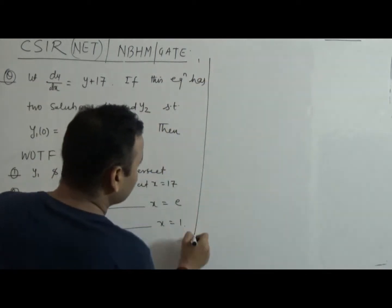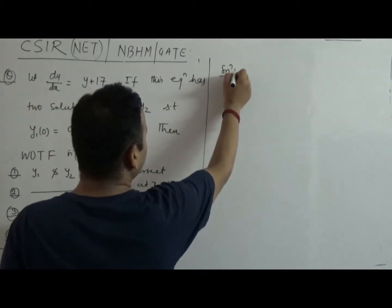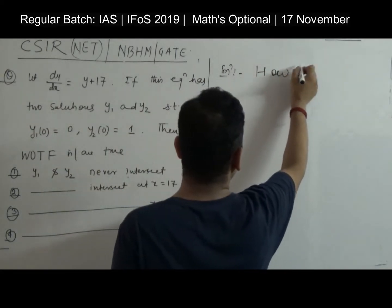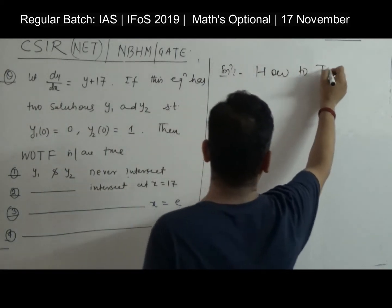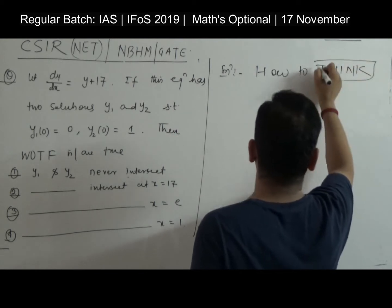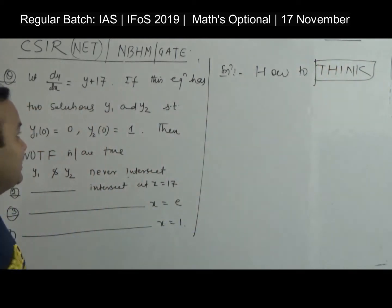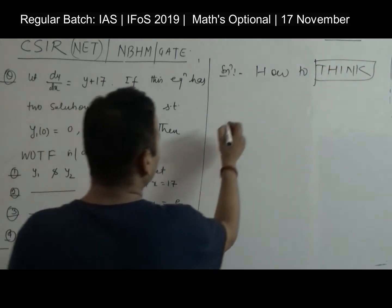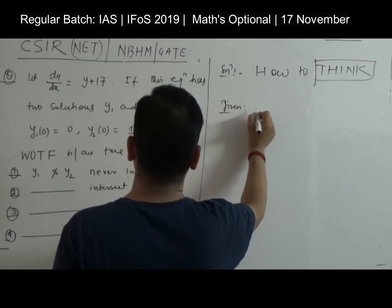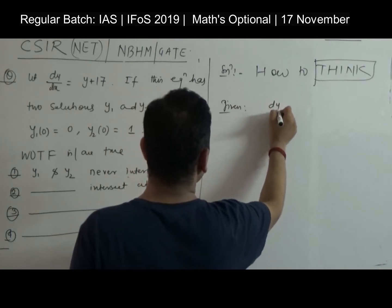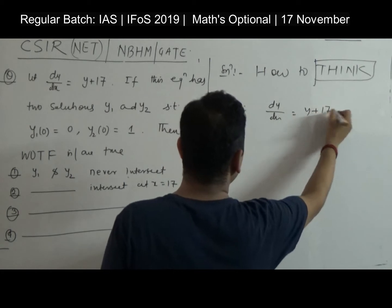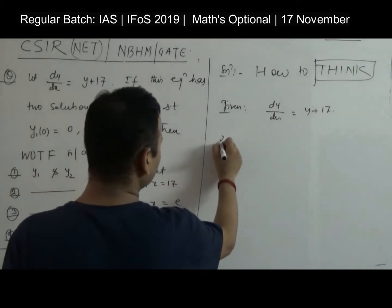So how to approach this kind of problem? How should one think about it? That's the important part. Given is this differential equation: dy/dx = y + 17.